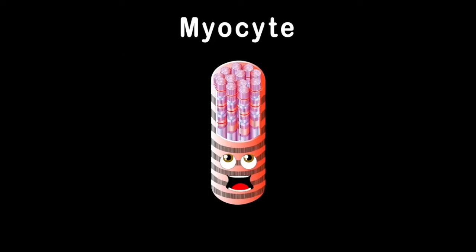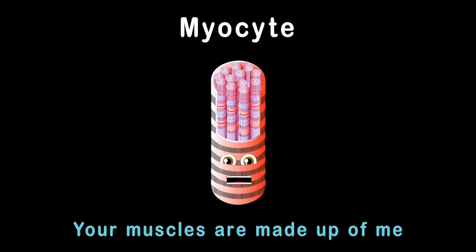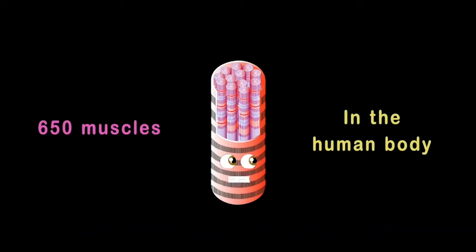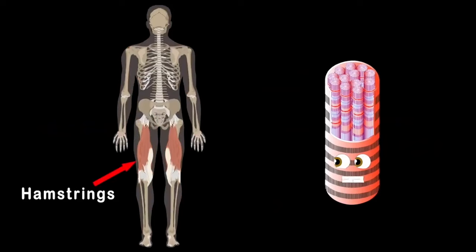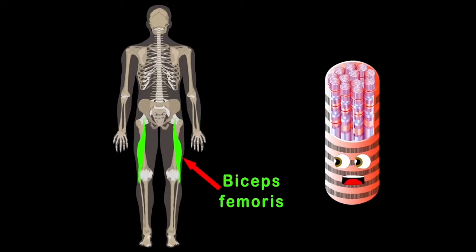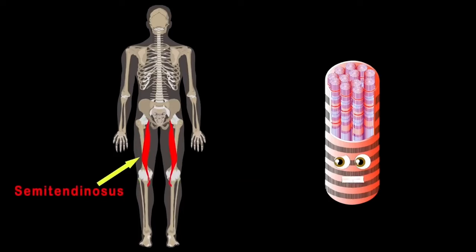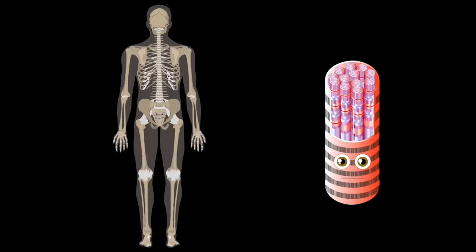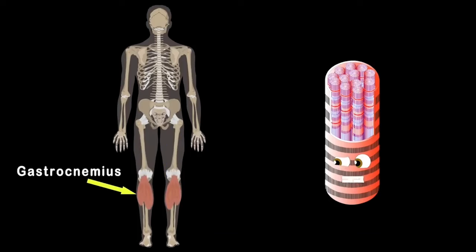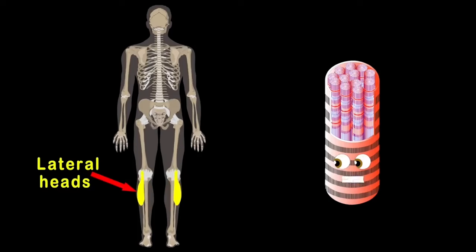I am a myocyte; your muscles are made up of me. Here's some of the 650 muscles in the human body. Now let's focus on the hamstrings — there are three muscles we'll see. The biceps femoris muscle is on the outside of the three. The semitendinosus makes up the middle part, while the semimembranosus is the inner on the chart. The gastrocnemius, also known as the calf, is made of the lateral and medial heads — two halves.